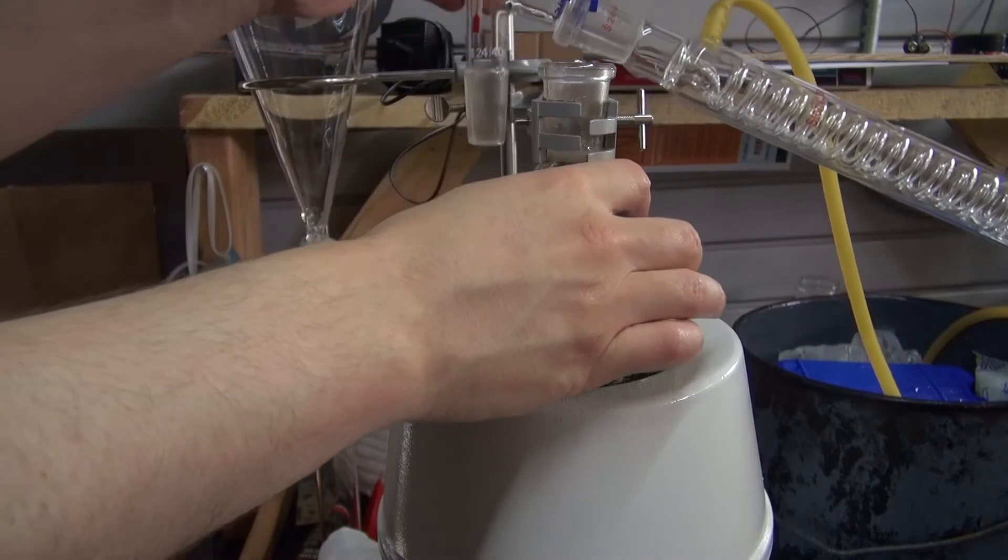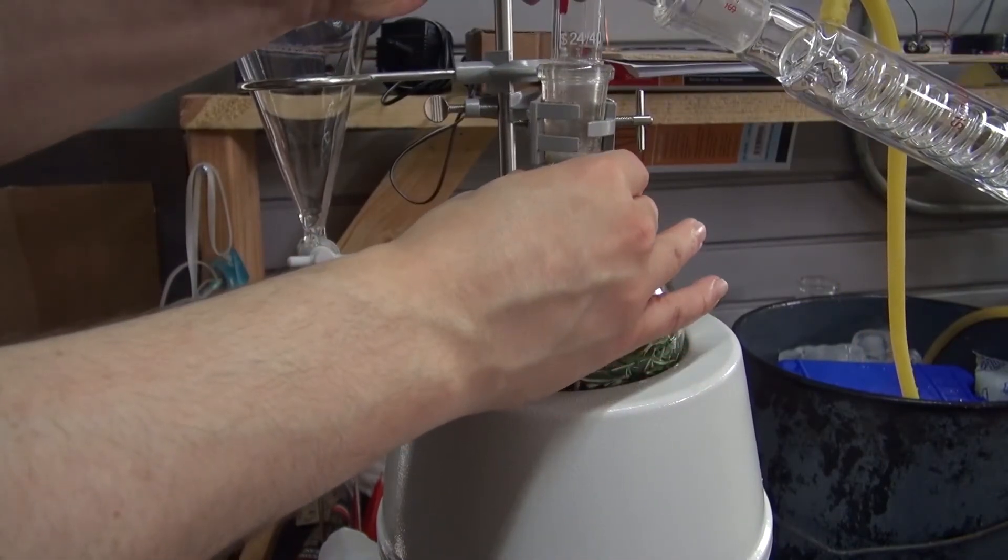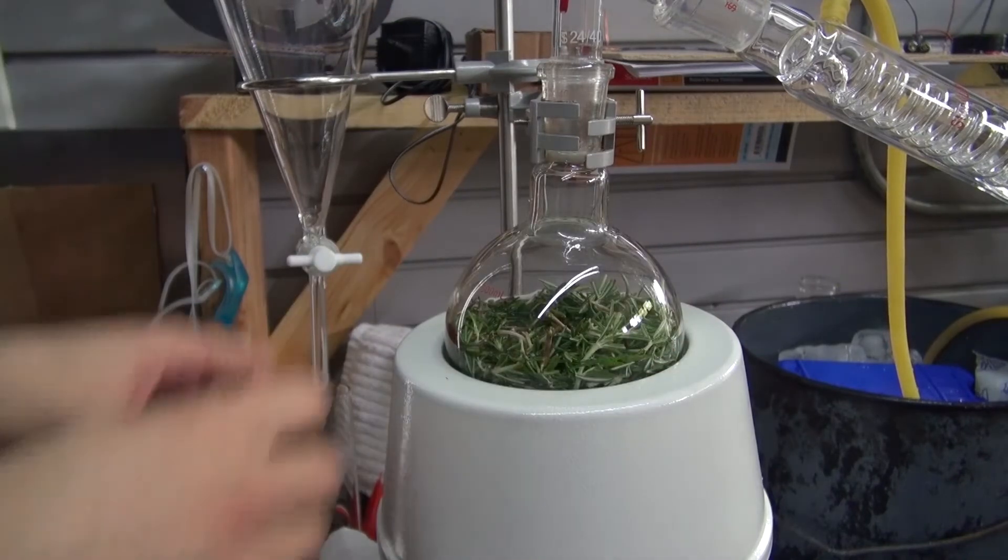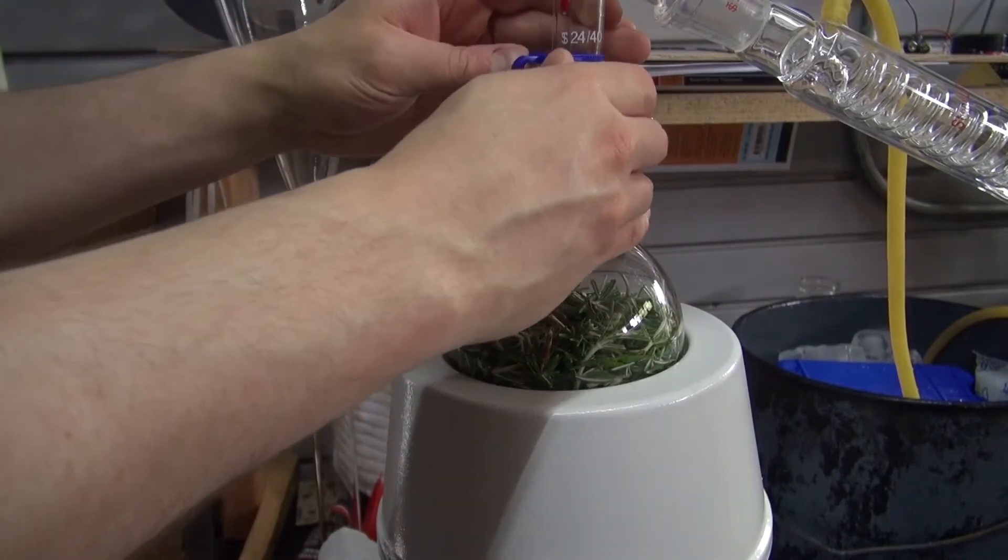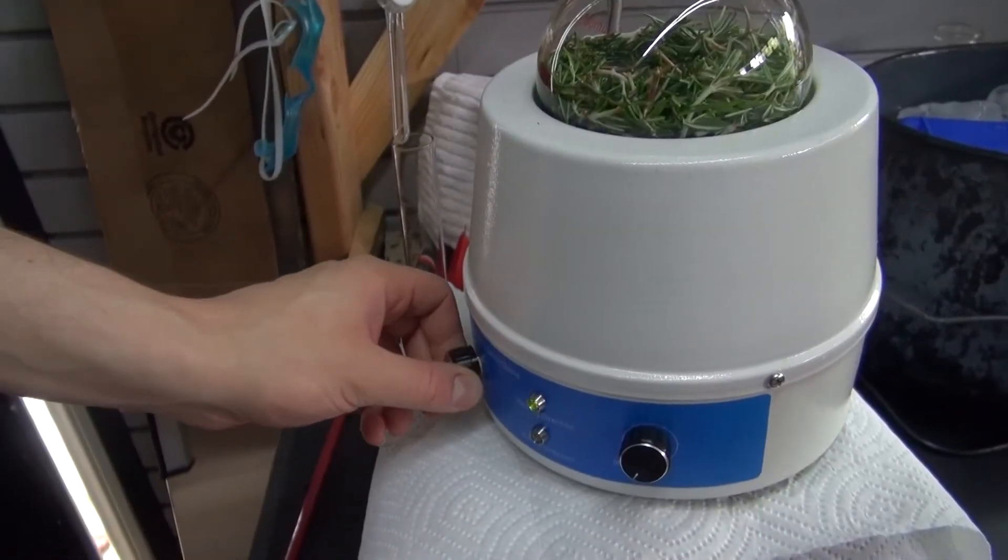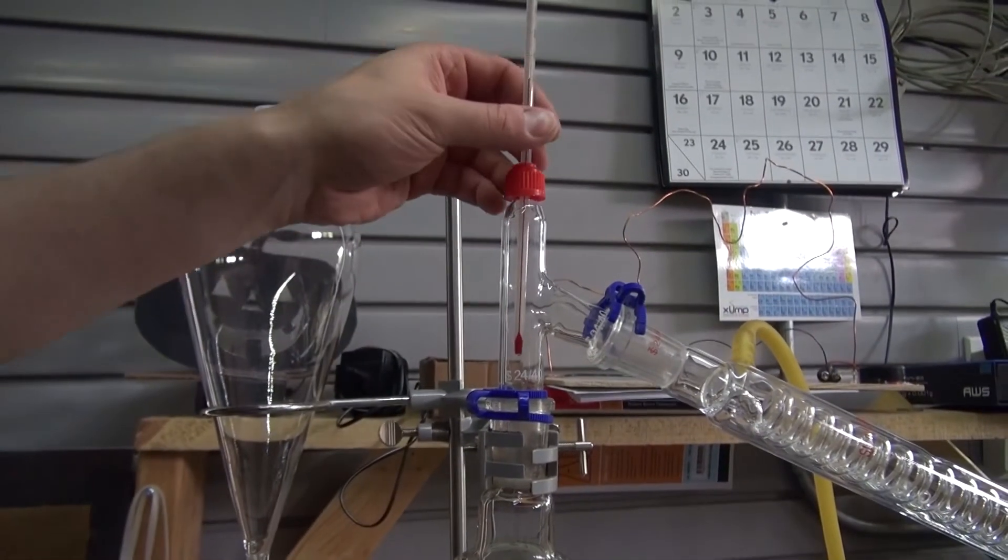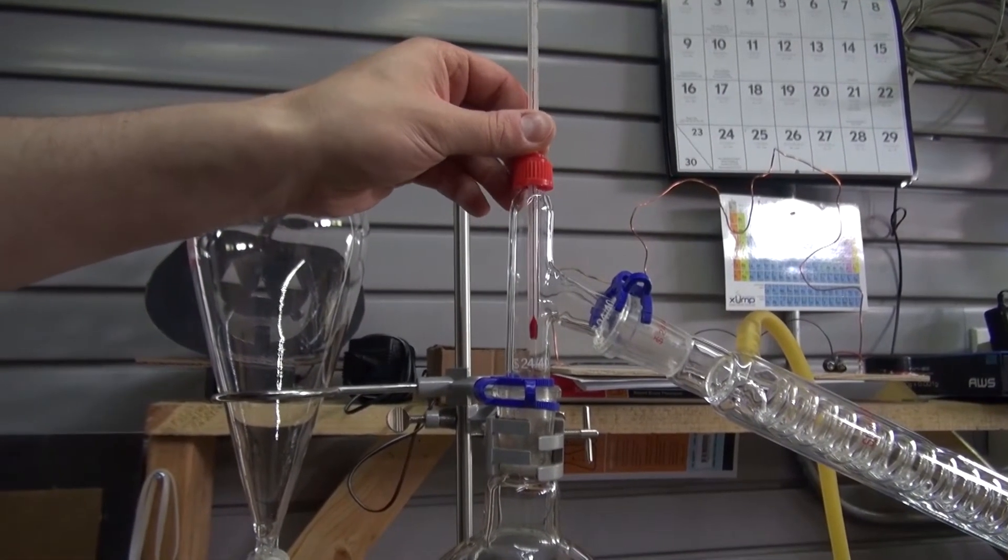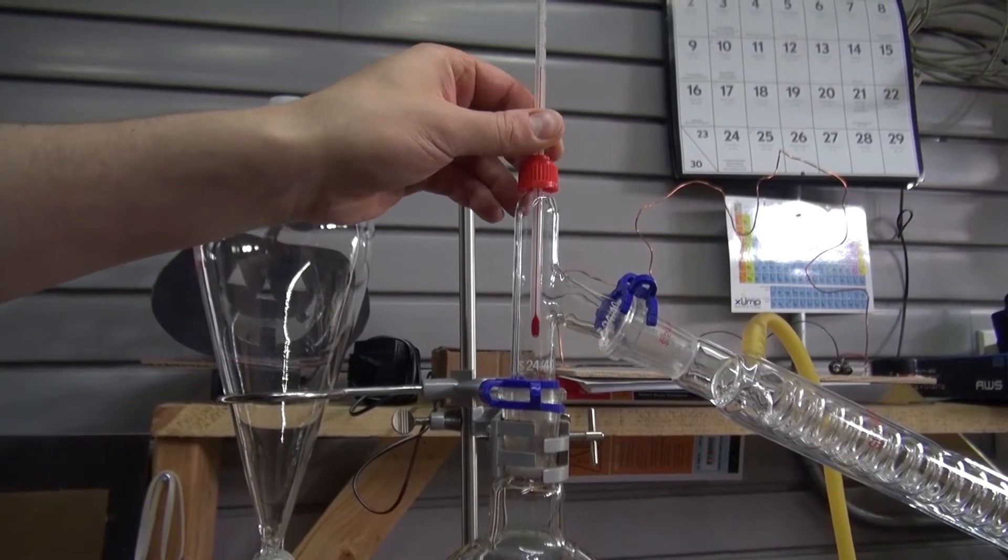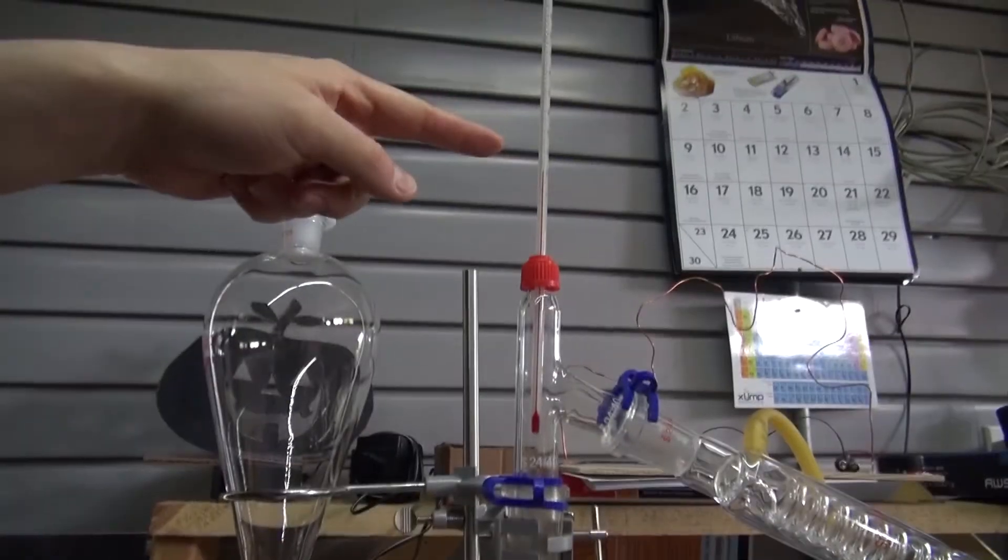Connect the two joints together and put the joint clamp in. Now turn on the heating mantle and turn it up to nearly maximum. Next adjust the thermometer to make sure it's measuring only the steam so that when it reaches 100 degrees Celsius your distillation process is ready to begin.